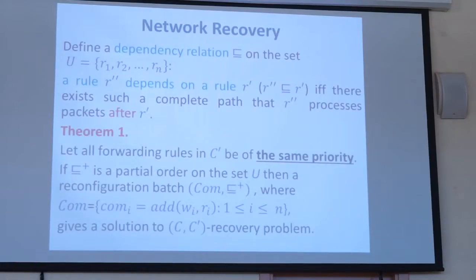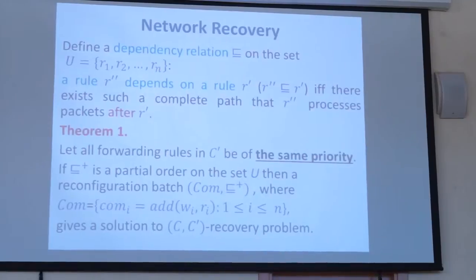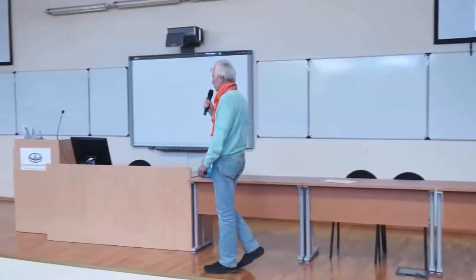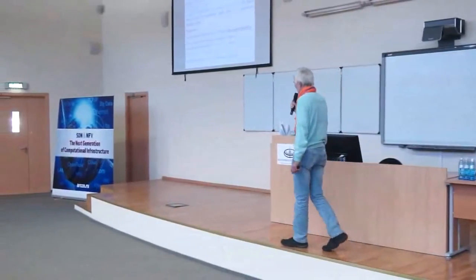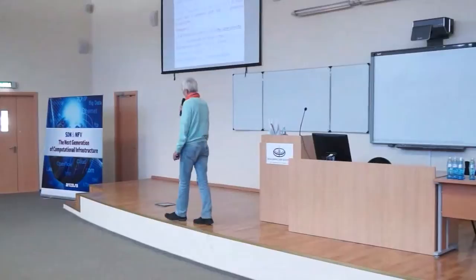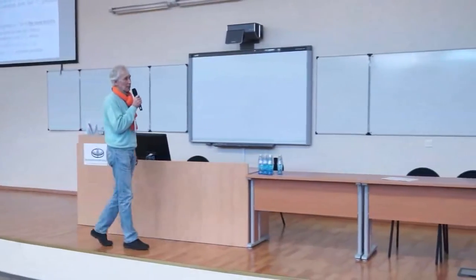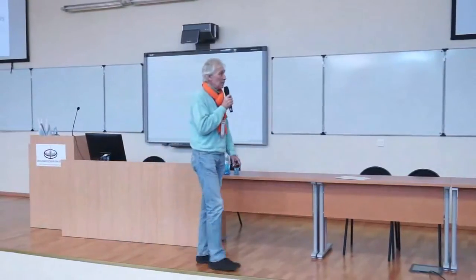We found that in some cases this restoration can be done rather easily. Suppose we define a specific dependency relation on the set of rules we want to restore. We say that one rule depends on another if the former rule is applied to packets only after the latter in some paths through the network. If our target configuration has only forwarding rules of the same priority, and this dependency order on the set of rules is a partial order, then a very simple reconfiguration patch can be used to give a solution to our problem.